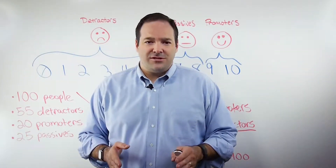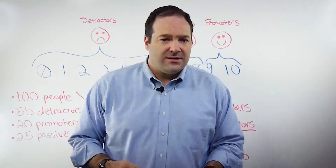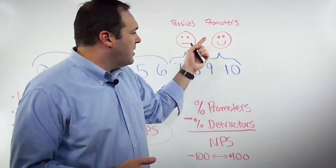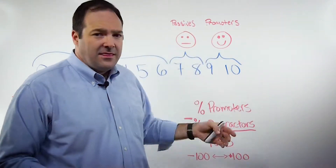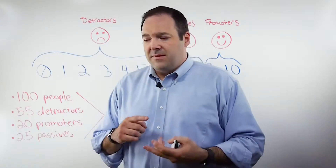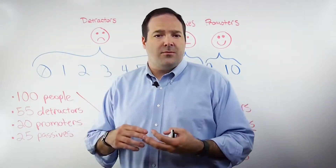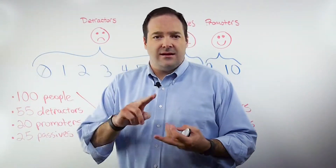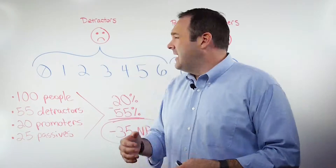Responses to this question are then grouped into three categories. First, promoters — people who score you from a 9 to 10. These are your best customers. They are most probably apt for cross-selling, up-selling, and loyalty programs.